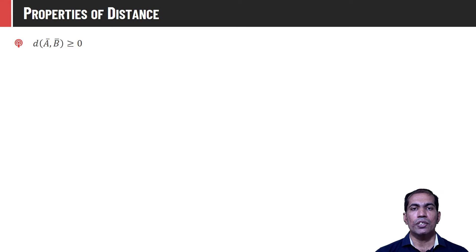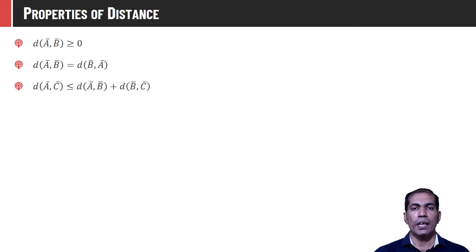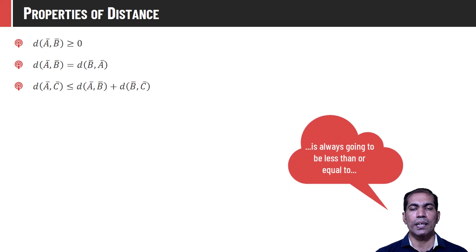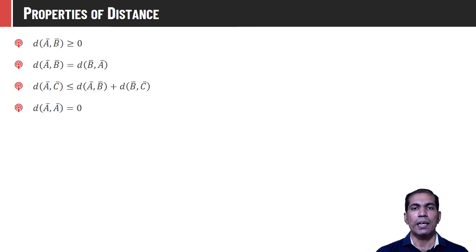Distance between any two vectors is always greater than or equal to zero, because in practice distance can never be negative: d(A-bar, B-bar) ≥ 0. Distance measures are always commutative: d(A-bar, B-bar) = d(B-bar, A-bar). Also, d(A-bar, C-bar) ≤ d(A-bar, B-bar) + d(B-bar, C-bar) — the triangle inequality. Consider A, B, C as three cities: the distance from A to C is always less than or equal to the distance from A to B plus B to C. And the difference between two identical vectors is definitely zero.